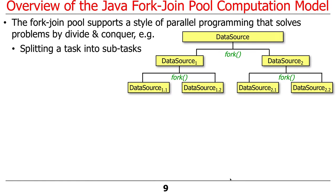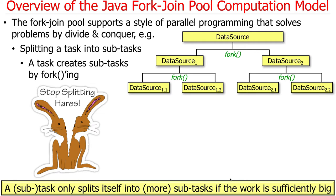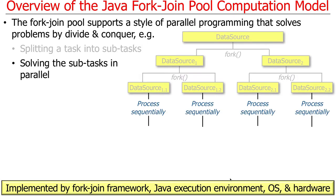In more detail: you take a big task, some source of data, and partition it into subtasks by forking. You don't fork past a certain point — you stop splitting at a certain level of granularity. You then run those subtasks concurrently. This concurrent execution is implemented by a coordinated effort between the ForkJoin framework, the job execution environment (the JVM or an ahead-of-time compiled infrastructure like Android ART), the operating system, and ultimately the hardware cores.